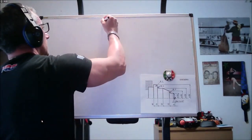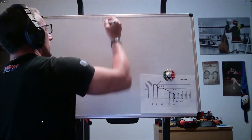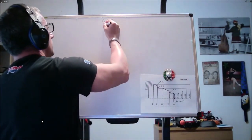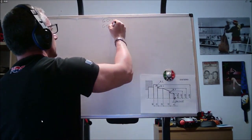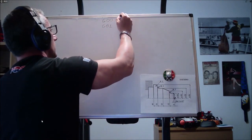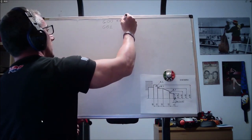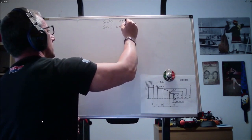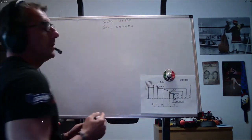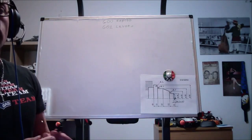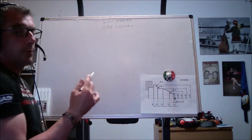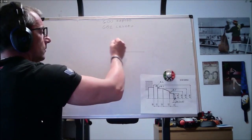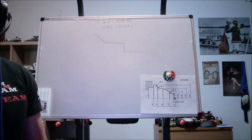Noi abbiamo visto che G00 muove la macchina in rapido. Abbiamo visto che G01 la muove in lavoro. G01 è però un'interpolazione lineare, ossia se io imposto G01 la macchina farà movimenti di questo tipo, delle linee rette.